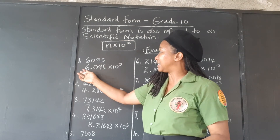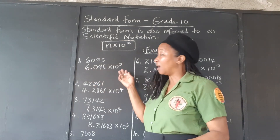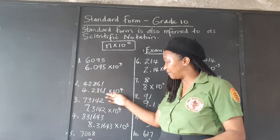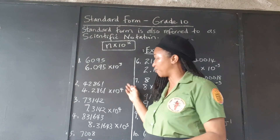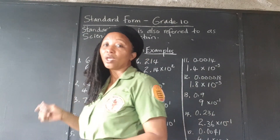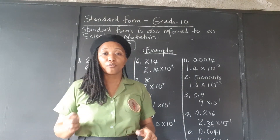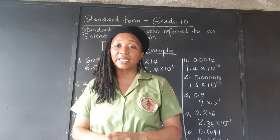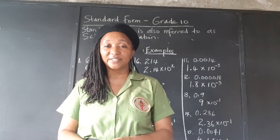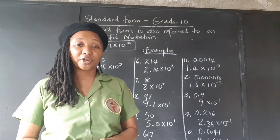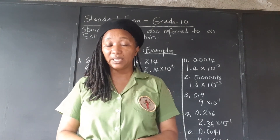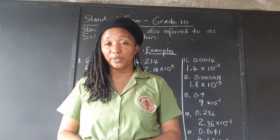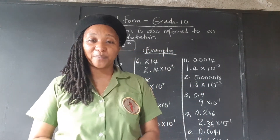So remember: 6,095 is the exact value of 6.095 times 10 to the 3rd power; 42,861 is the exact value of 4.2861 times 10 to the 4th. These numbers are identical. So that's standard form, or scientific notation. Remember to look out for the videos on rounding to a certain number of decimal places and significant figures. If you have been helped by this video, just drop a word to say thank you and share the video so others may benefit. Let me know if there's a particular topic you'd like me to do a video on. If you haven't subscribed, please subscribe now and I'll see you in the next video. Thank you.